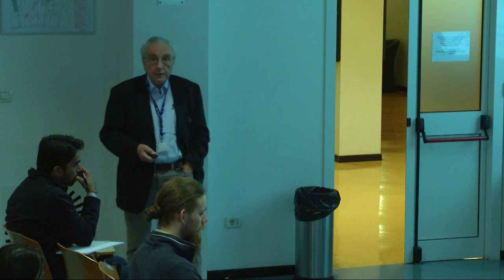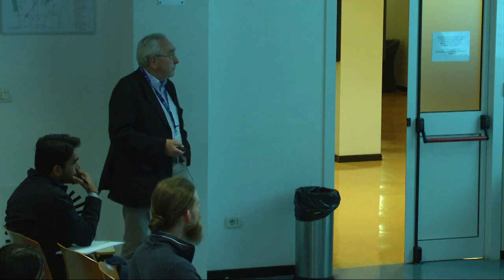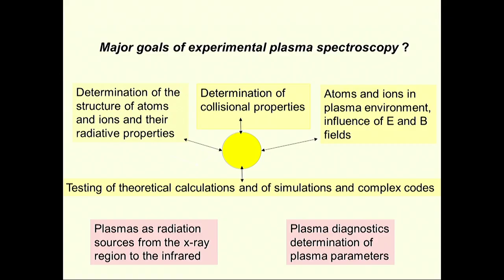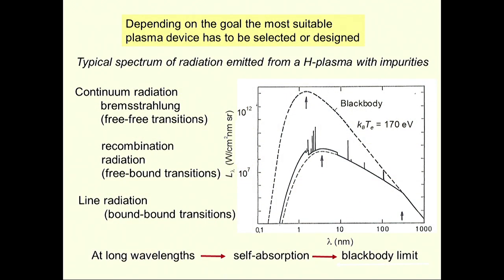Then you have the other area: you want to use plasmas as radiation sources, so you have to characterize your radiation source, or you do plasma diagnostics for determining plasma parameters. Now, depending upon your task, you have to select the plasma and the diagnostic equipment — which usually is not the case; you have to take what is around in the lab.